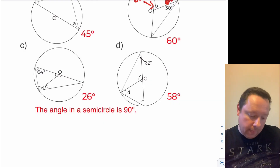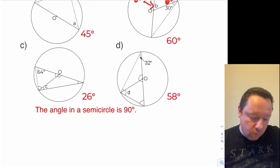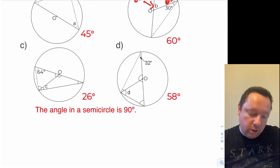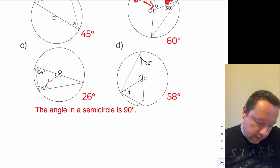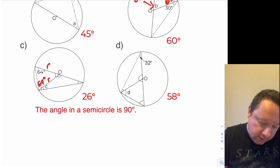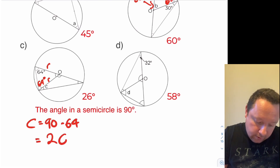Question c: looking at this big triangle, we know that c plus this little angle here must be 90. Remember we can always find isosceles triangles when it's split at the middle — here's a radius and there's a radius — so that means the outside angle here must be 64 degrees, which means c equals 90 minus 64, which is 26 degrees.